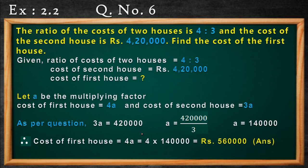Now the last question for today, question number 6. The ratio of the cost of two houses is 4 is to 3. The cost of the second house is 4,20,000. We are asked to find the cost of the first house. The ratio of the cost of the two houses is 4 is to 3, cost of second house is 4,20,000, and cost of first house equals question mark. Since we are given the ratios, we can use the help of a multiplying factor — I am considering A to be the multiplying factor.